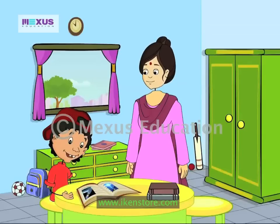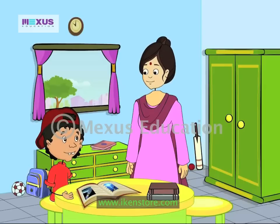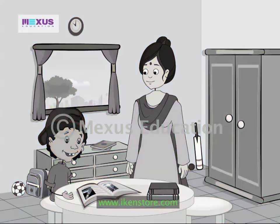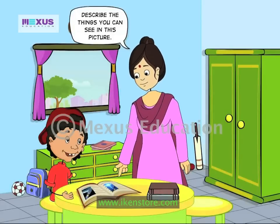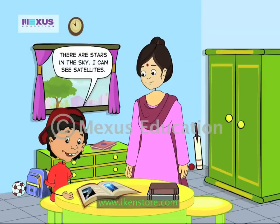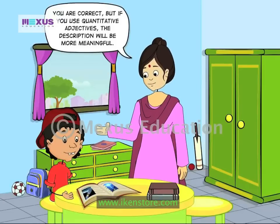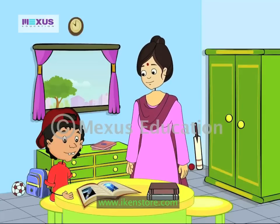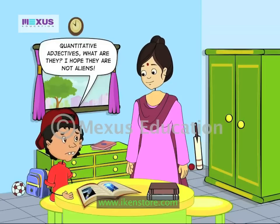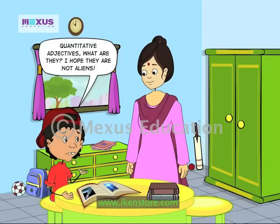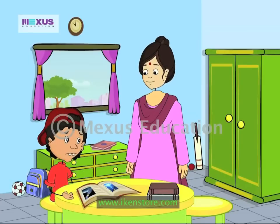Sid is preparing for his exams. Sid's mother is reading him a lesson based on the universe, teaching him using various pictures in the book. She tries to make the lesson interesting and asks Sid to describe the picture they are looking at. He tells her he can see stars and satellites in the sky. She tells him his description will improve considerably if he uses quantitative adjectives. Sid does not know what quantitative adjectives are — we will teach him.